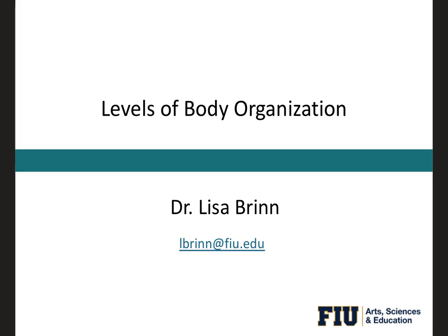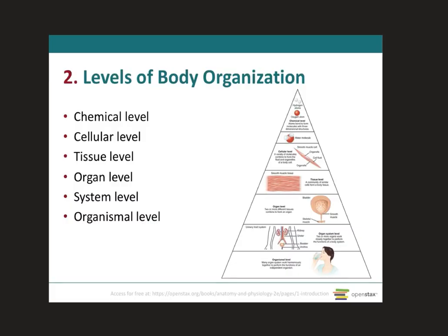For this video recording we will be covering the different levels of body organization, going from the chemical level all the way up to the organismal level, and then we will be able to differentiate the 11 organ systems. The human body consists of several interrelated levels of structural organization ranging from the least complex, which is the chemical level, all the way to the most complex, which is the organismal level.